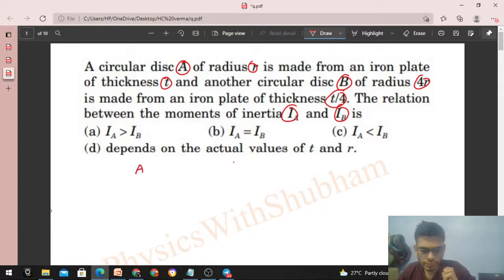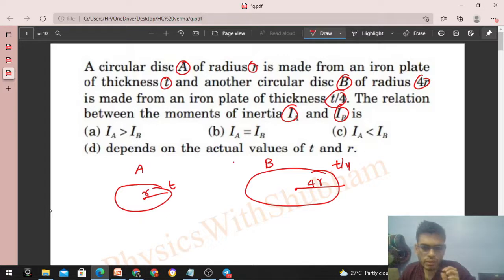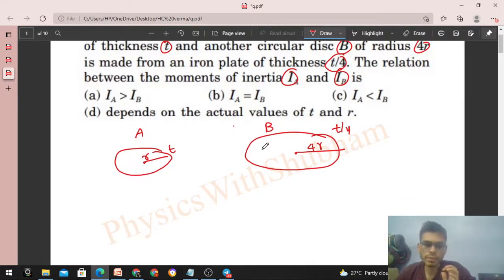So it is disk A: radius r and thickness t, and disk B: radius 4r and thickness t/4. We have to compare the moment of inertia of the two discs. It's not given about which point, so for the time being let me compare the moment of inertia about the center of mass.